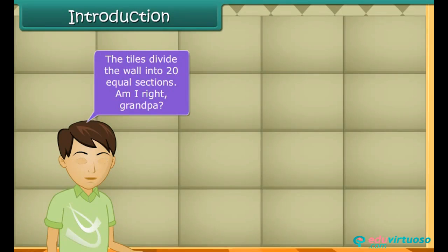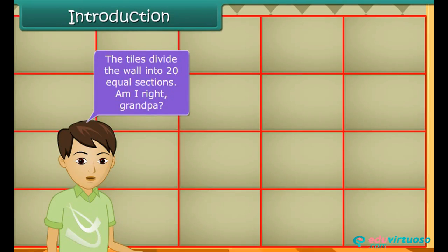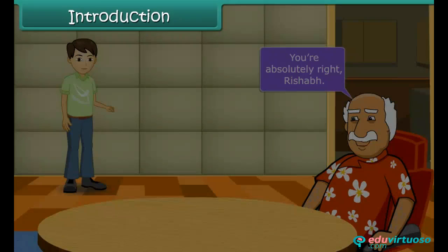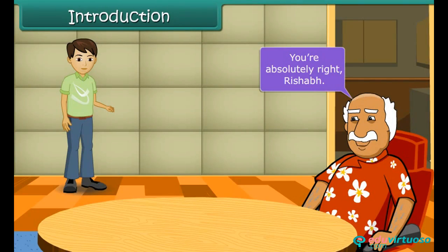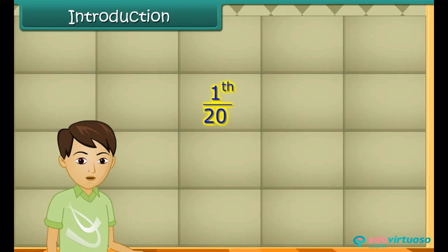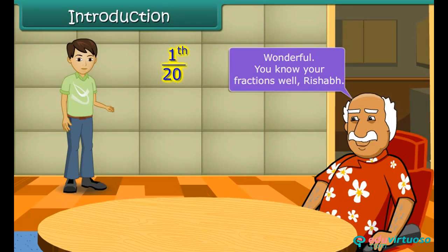The tiles divide the wall into twenty equal sections. Am I right, Grandpa? You are absolutely right, Rishabh. Each section represents one by twentieth of the whole wall, Grandpa. Wonderful! You know your fractions well, Rishabh.